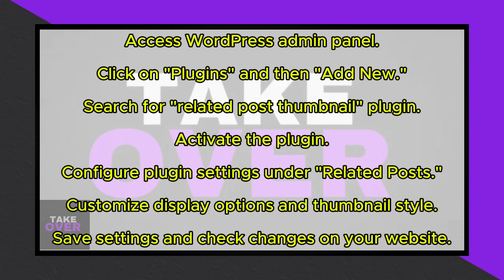Select the first plugin that appears. After installation, activate the plugin. On the left panel, you'll now see the Related Posts option. Click on it to access its settings.